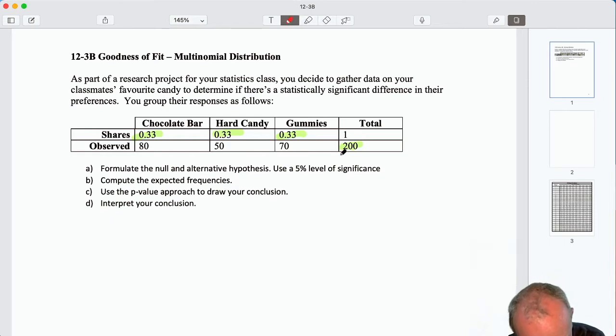So our null hypothesis is that the shares are all the same, that the proportion of those who like chocolate bar is equal to hard candy, equal to gummies, and they're all equal to 0.33. So the null hypothesis is that this follows a multinomial distribution with all proportions equal to 0.33.